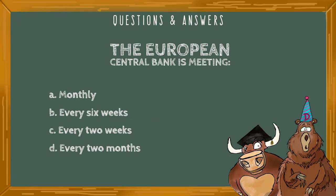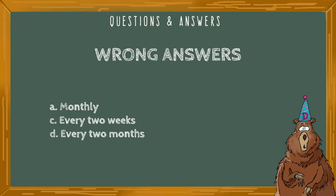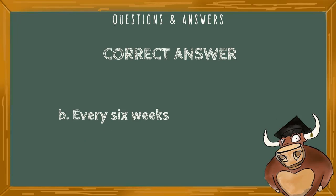The European Central Bank is meeting: A, monthly; B, every six weeks; C, every two weeks; or D, every two months. Wrong answers include A, monthly; C, every two weeks; and D, every two months. The correct answer is B, every six weeks.